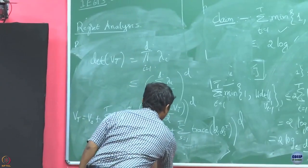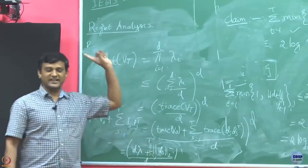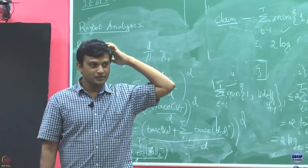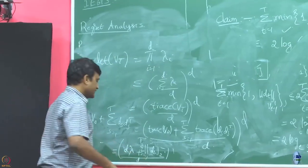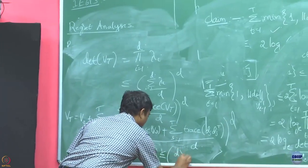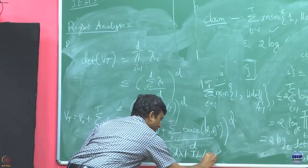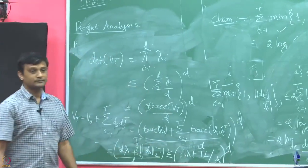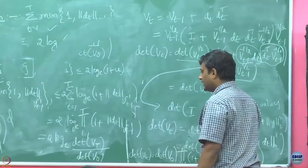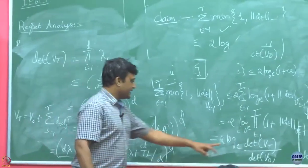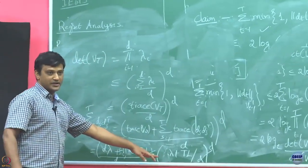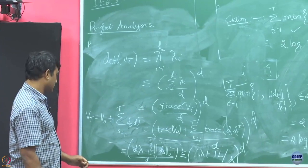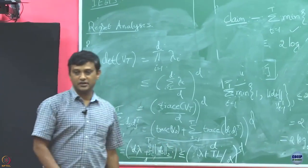Appealing to our second assumption that ||d_s|| ≤ L, we get trace(V_T) ≤ Dλ + TL². So det(V_T) ≤ (λ + TL²/D)^D. Taking the log and dividing by det(V_0) = λ^D, the bound on the summation becomes 2D · log(1 + TL²/(λD)).